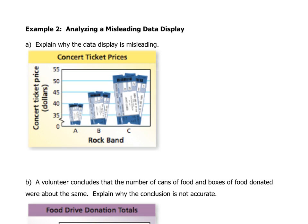Now we're going to look at some examples of what's called misleading data. Misleading data happens when you change your scale or change the size of a picture in a pictograph. When you change your scale, some of you might have noticed when graphing lines that if your scale goes by twos and someone else's goes by threes or fours, your graphs look very different. Changing your scale skews your data a little — it's not necessarily wrong, but sometimes you have to look at the graph knowing that it maybe doesn't represent the data in the best way.